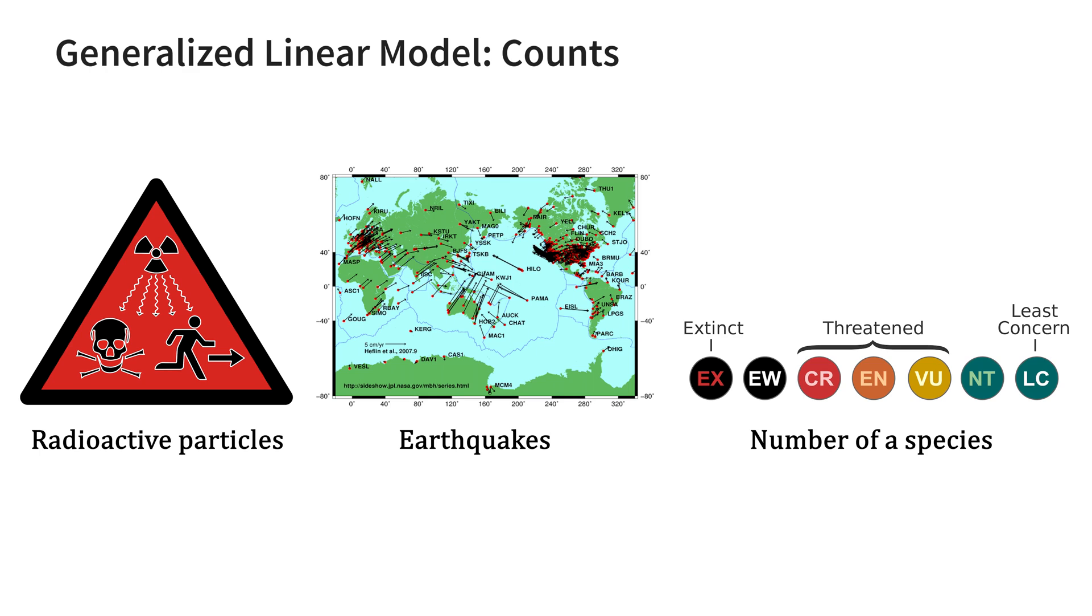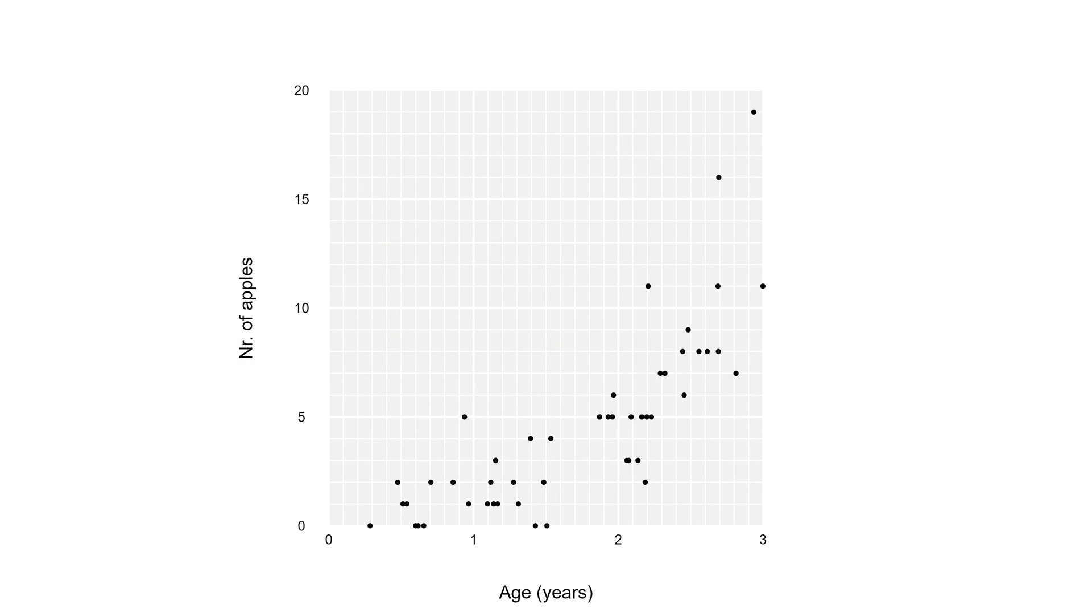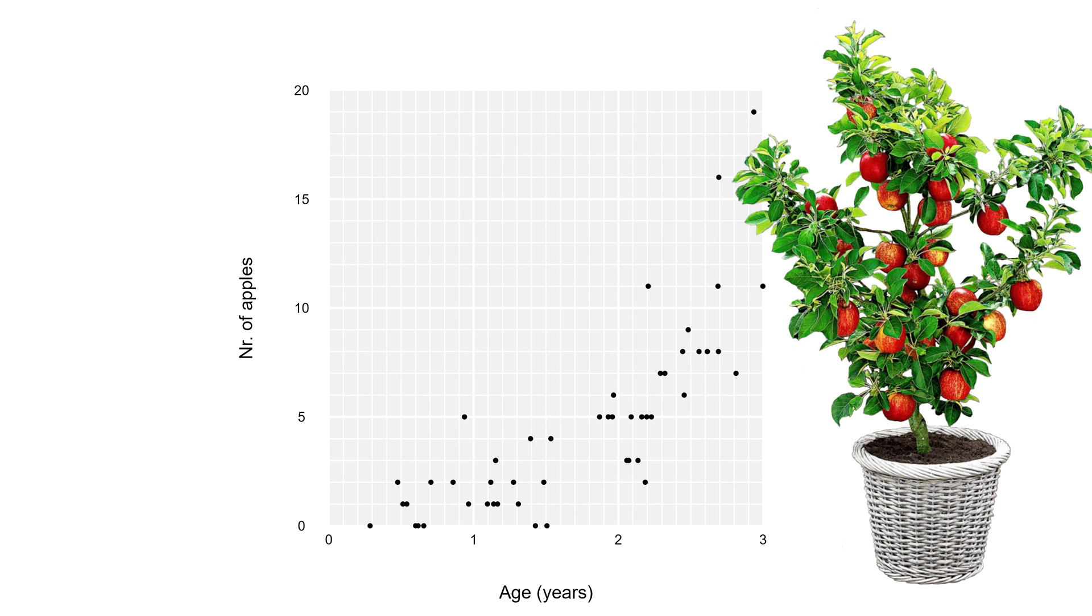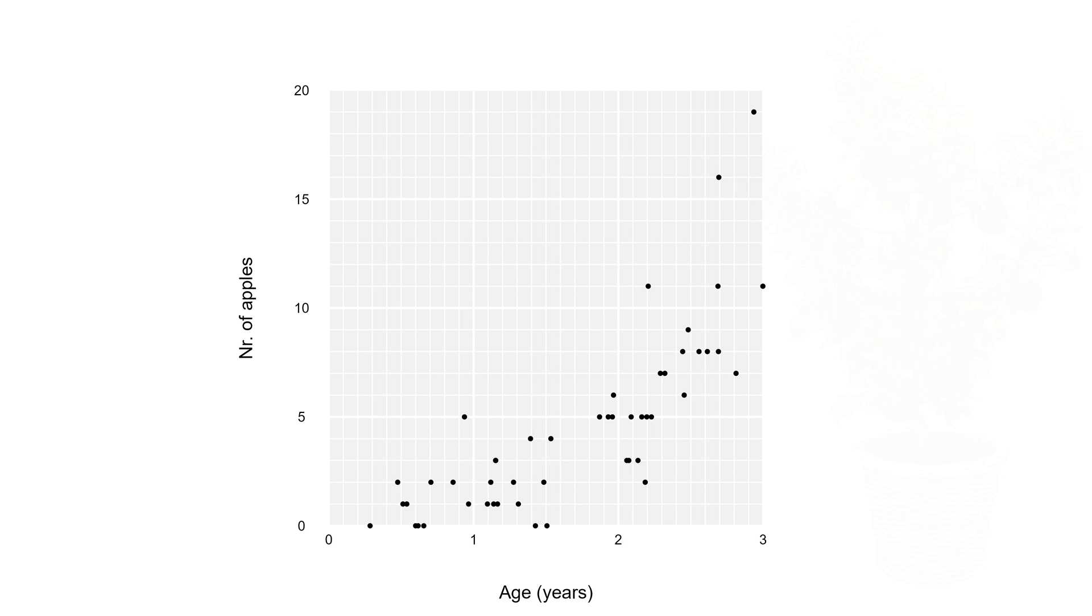In this video we'll have a look at the first real model for counts, a Poisson GLM. As an example, let's consider an orchard of apple trees, each planted at different times. Here we want to know how the age of the tree correlates with the average number of apples it yields. The observations are then of 50 individual trees planted at different times.